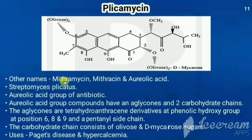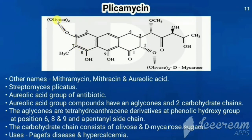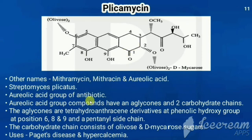Other names of plicamycin are mithramycin, mitracin, and aureolic acid. It is obtained from Streptomyces plicatus and belongs to the aureolic acid group of antibiotics. Aureolic acid group compounds have an aglycone with two carbohydrate chains. The aglycone here is called tetrahydroanthracin — anthracin refers to three fused benzene rings, and 'tetrahydro' indicates the absence of two double bonds requiring addition of four hydrogens.